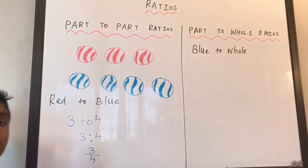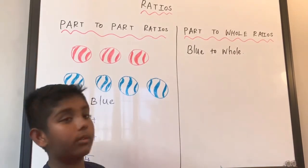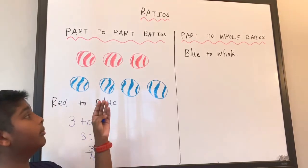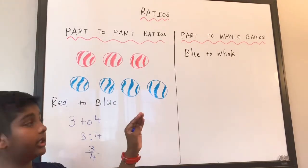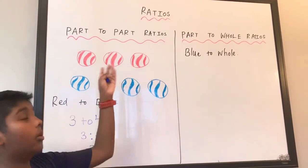Okay, let's move on to the next part - part-to-whole ratios. So what does that mean? Part-to-whole ratios means we have to take one part and then compare with the whole set.